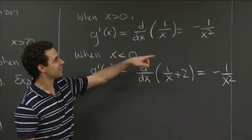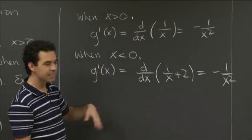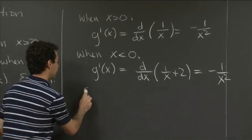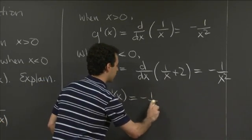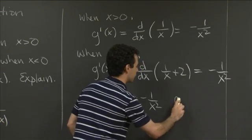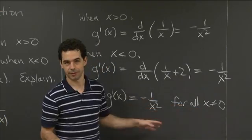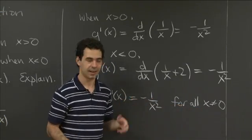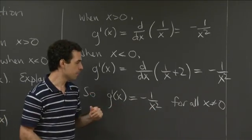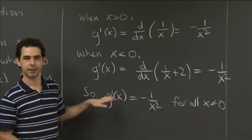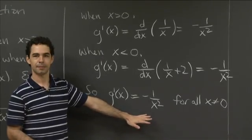So we get minus 1 over x squared on both pieces. Although we defined this function piecewise, we can summarize by saying the derivative is minus 1 over x squared for all x not equal to 0 — we don't need the piecewise definition anymore. It's kind of interesting that we can summarize the derivative of this piecewise function in a non-piecewise way.